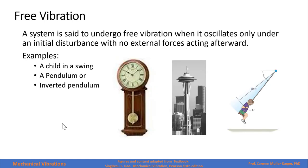Let's start by defining free vibration. A system is said to undergo free vibration when it oscillates under an initial perturbance or initial conditions with no external acting forces. For example, you can have a child in a swing — he receives a push and then swings by itself.